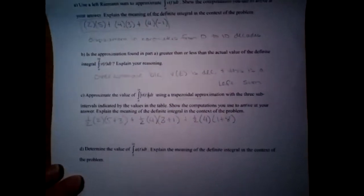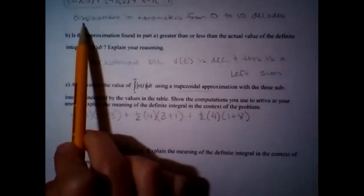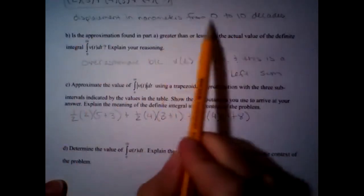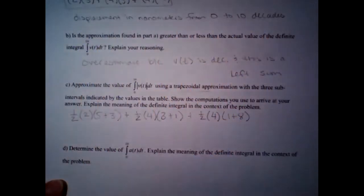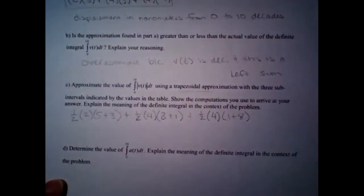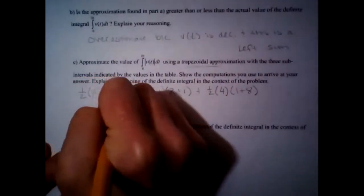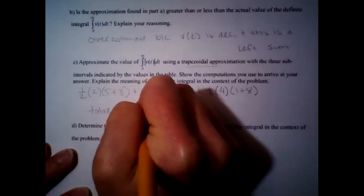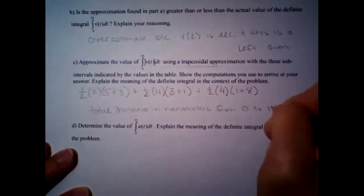There should be units at the end, but I'll put them in the explanation. This will be almost the exact same sentence as before, with one change — instead of displacement, it's total distance because of the absolute value. So: total distance in nanometers from 0 to 10 decades.